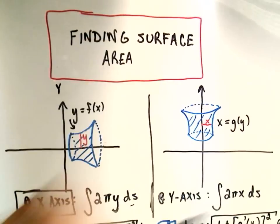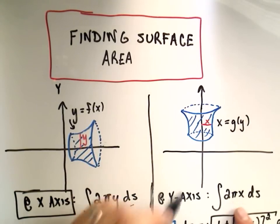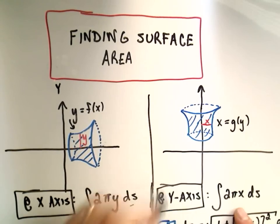Likewise, if we want to go about the y-axis, we use the formula 2πx ds. Okay, so you have no choice which one of these two you use. If you're going about the x-axis, you have to use the first one. If you're going about the y-axis, you have to use the second one.